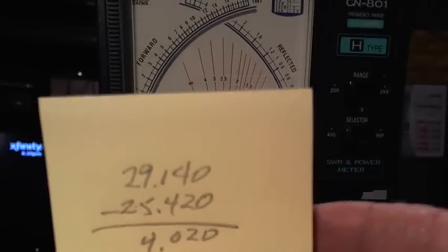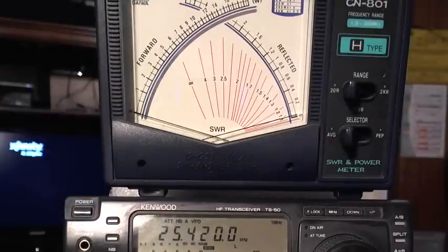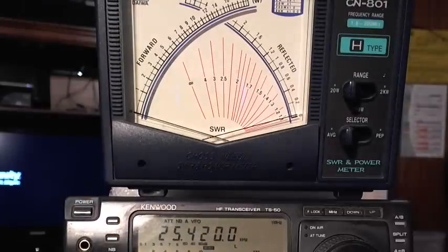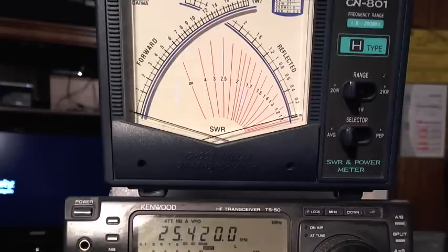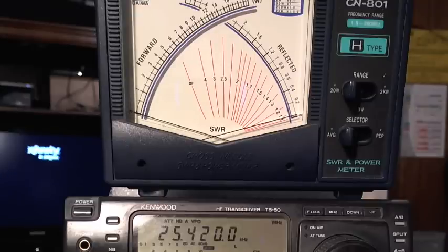You don't have to get it perfect anywhere in there. If this antenna wasn't resonant at 27205, which is just about the best SWR it's going to get, that's not to worry. That's plenty of bandwidth for you to work in.